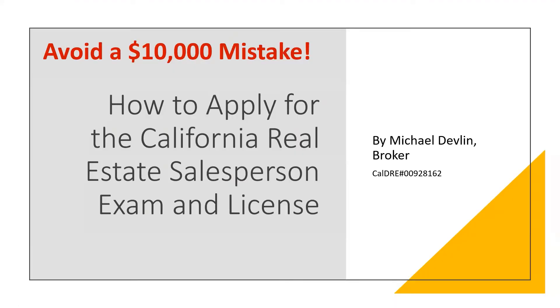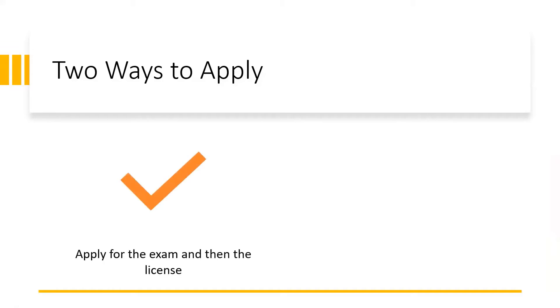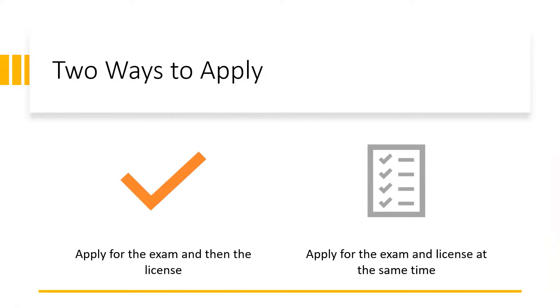Let's talk about how to apply for the California real estate salesperson's exam and license, and at the same time avoid a potentially very costly mistake. There are two ways in which you can apply. Number one, you can simply apply to take the licensing exam, and then if you pass it, apply for the license. Or the second approach is to apply for the exam and the license at the same time — that's called the combo approach, and it's probably the preferable method.